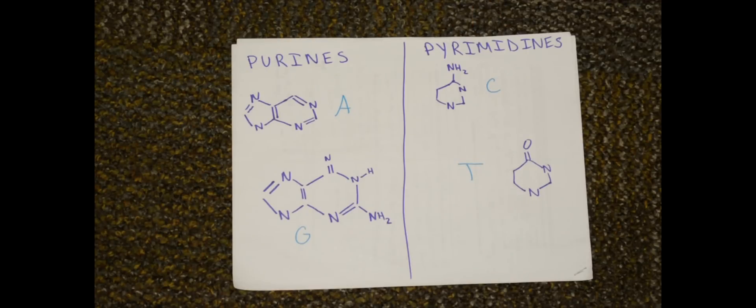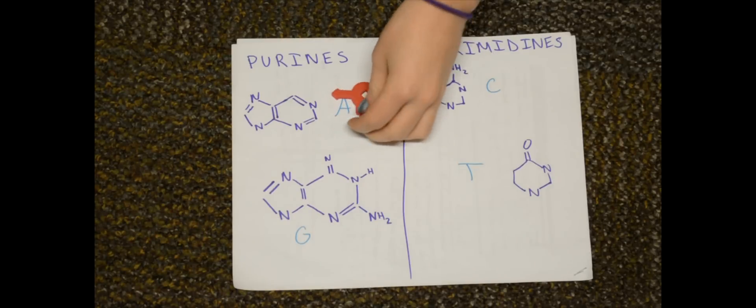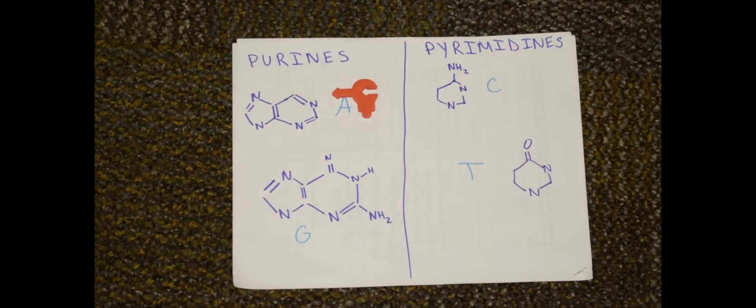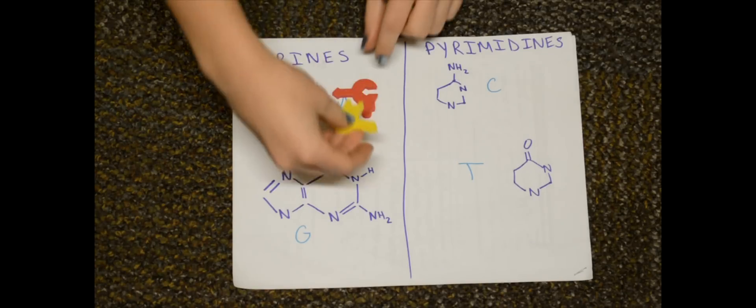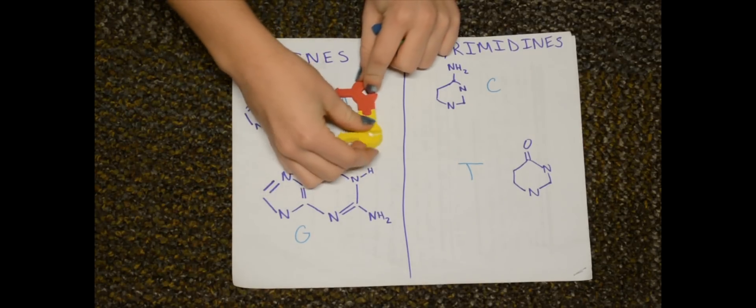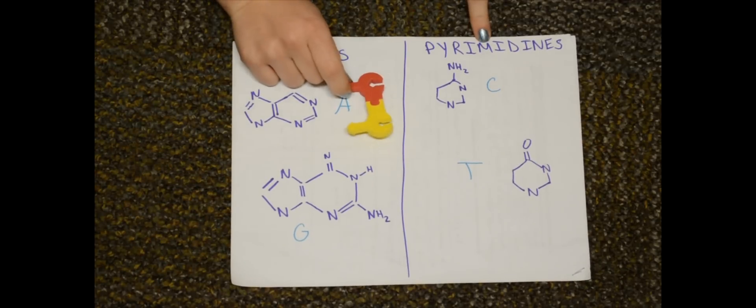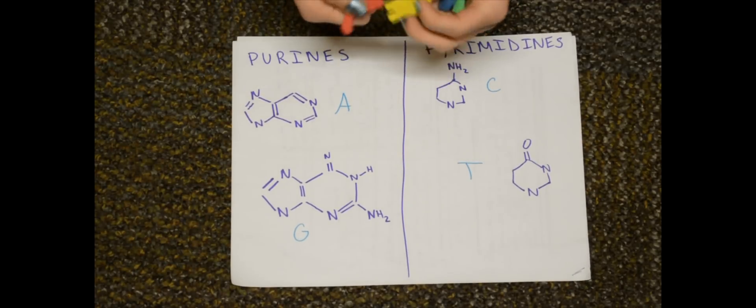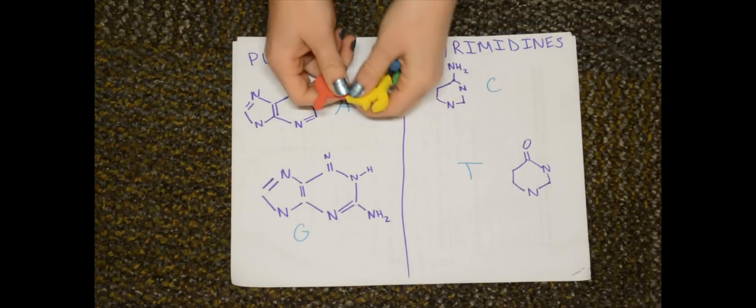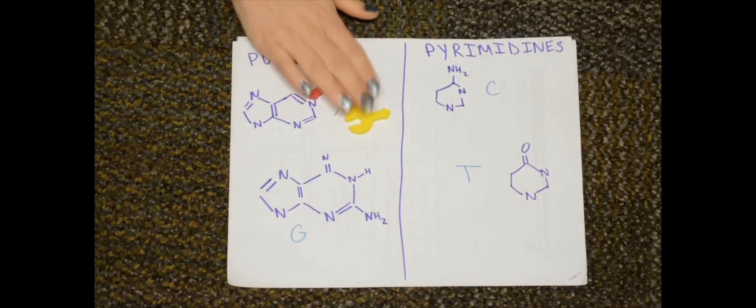When you bond them together, you'll take an adenine, which is the red piece, and that will pair with thymine, which is the yellow piece. So when you connect them, you're having one purine bond one pyrimidine. These two actually form—they would actually go this way—but that was just a mistake.